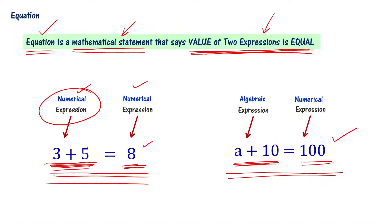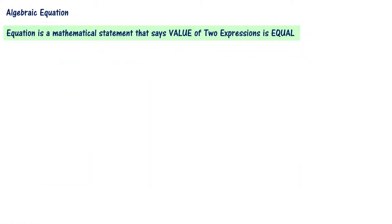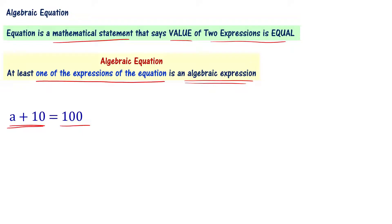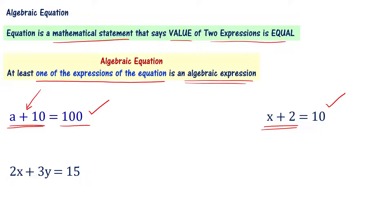Let us understand more about algebraic equations. An equation is a mathematical statement that says the value of two expressions is equal — expressions can be numerical or algebraic. An algebraic equation is one where at least one of the expressions is an algebraic expression. For example, a plus 10 equal to 100, x plus 2 equal to 10, 2x plus 3y equal to 15, and x plus y equal to 10 are all algebraic equations.